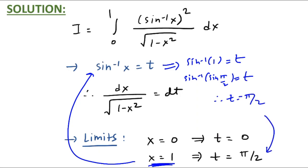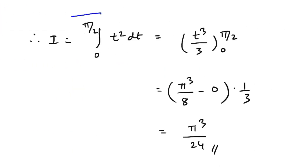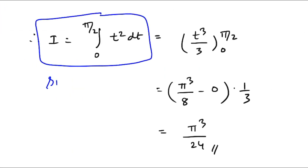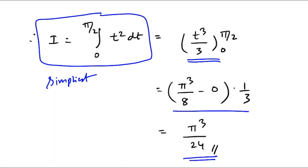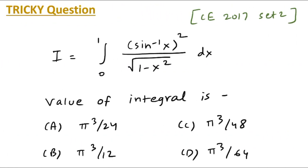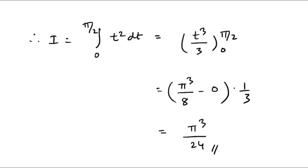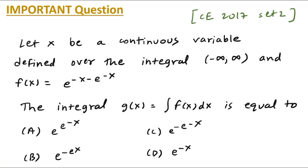Now the integration is very simple — the simplest version: integral from 0 to π/2 of t squared dt. The answer is t cubed by 3; applying the limits — upper limit π/2 minus lower limit 0 — you get the answer π cubed divided by 24. So π³/24, which is option a, is correct.